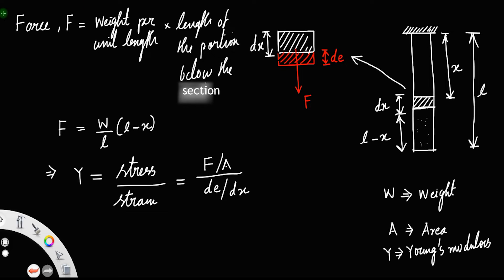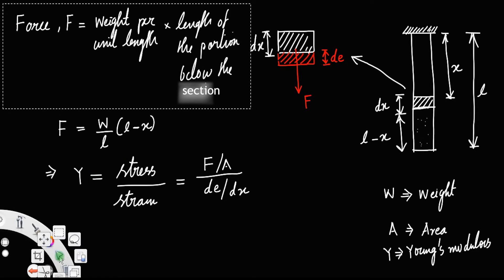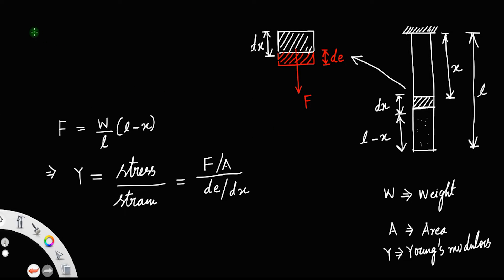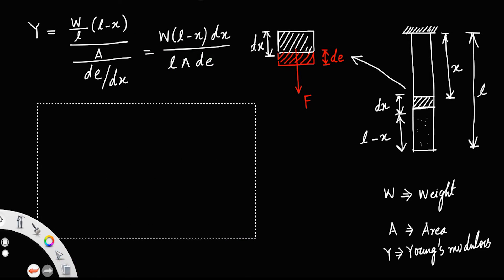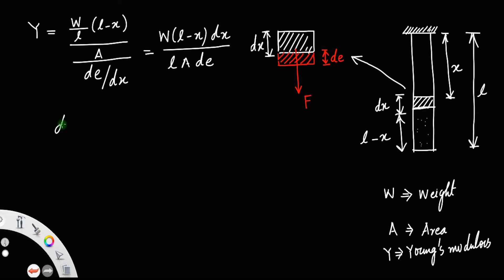Let us substitute all the values. Y is equal to the force (W/L)(L minus x) divided by area A, divided by dE/dx. This simplifies to: dE is equal to W times (L minus x) times dx divided by L·A·Y.